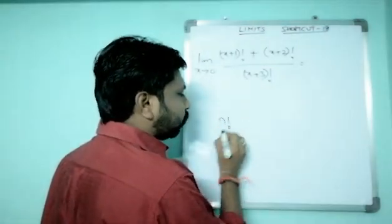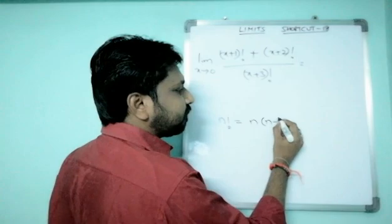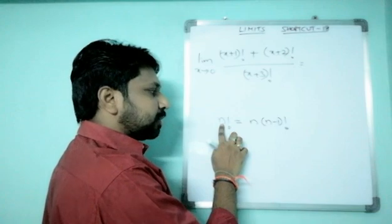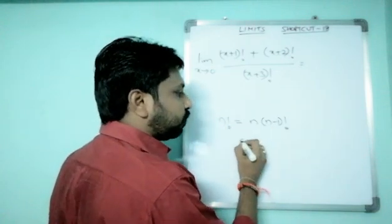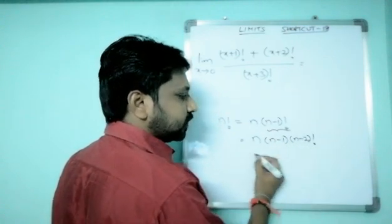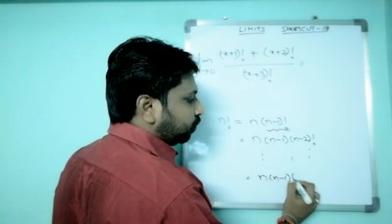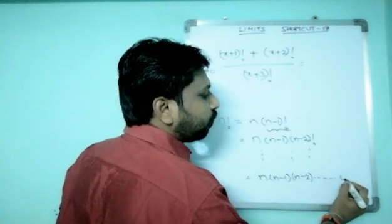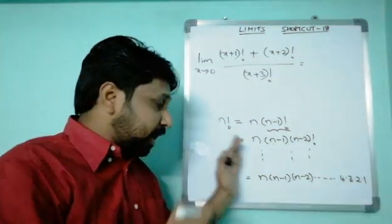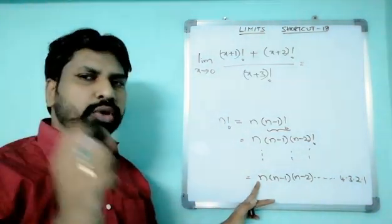For example, n factorial can be written as n into (n-1) factorial. So n factorial equals n × (n-1)!. And (n-1)! can be written as (n-1) × (n-2)!, and so on. If you continue writing like that, you get n × (n-1) × (n-2) × ... × 4 × 3 × 2 × 1.